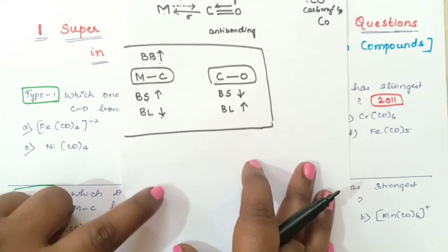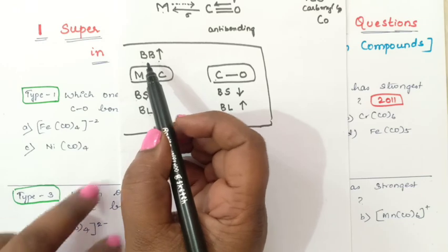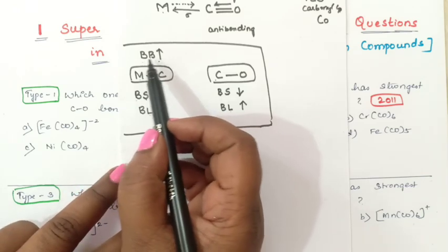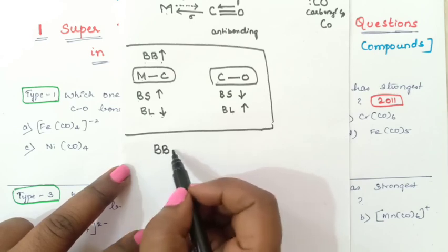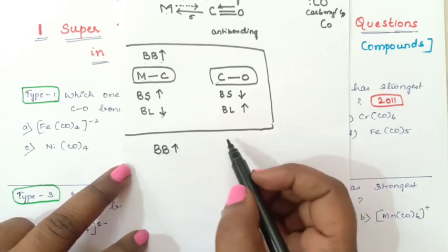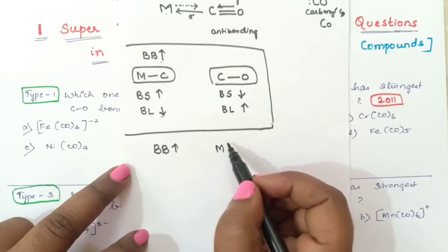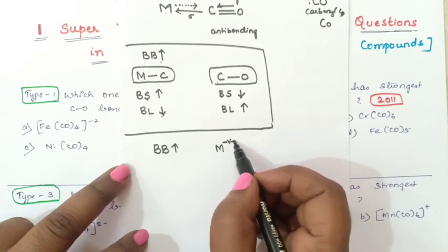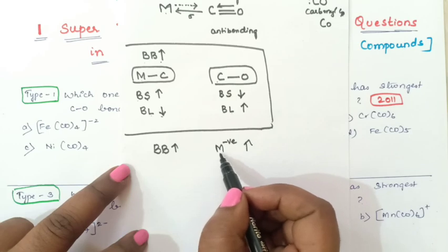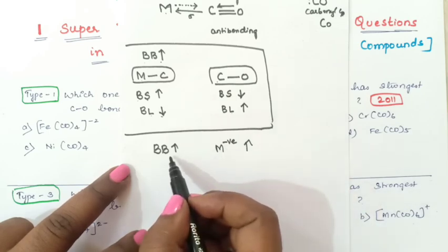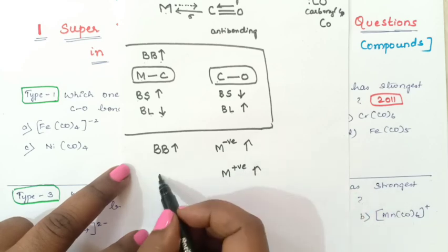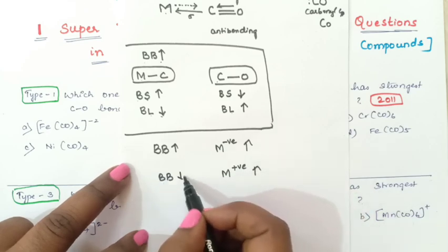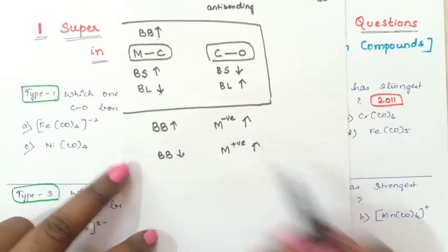One more question: how do we find in which compound backbonding will be more? If the metal has more negative charge, backbonding will increase. If positive charge on the metal increases, then backbonding will decrease. So this is how you can find out, and now we will solve the questions.